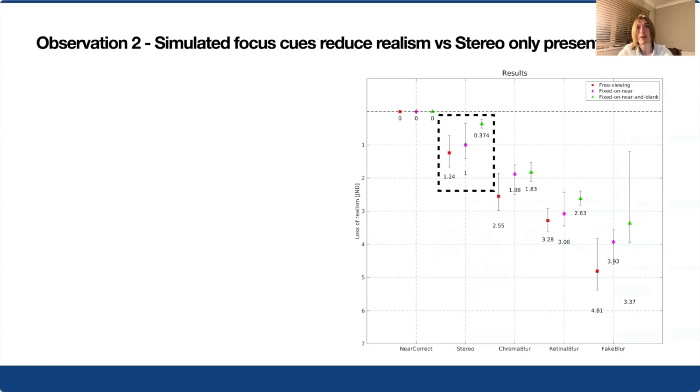We also observed that in all cases, simulating focus cues degraded realism relative to both presenting near physically correct focus cues and presenting no focus cues at all. While we can only speculate on the reasons for this, this finding has important implications for the utility of gaze-contingent rendering on near-eye stereoscopic displays and warrants further study.